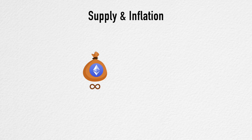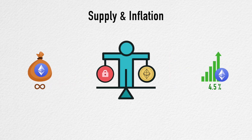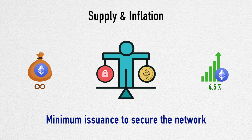Ethereum doesn't have a fixed supply like Bitcoin. The current inflation rate is approximately 4.5%. The Ethereum community believes that a steady, predictable inflation is crucial to keeping the blockchain secure well into the future, and Ethereum's monetary policy is best described as minimum issuance to secure the network. The upcoming ETH 2.0 transition aims to gradually decrease the inflation rate.